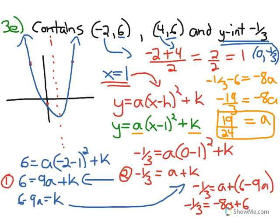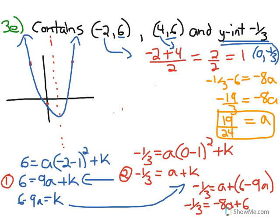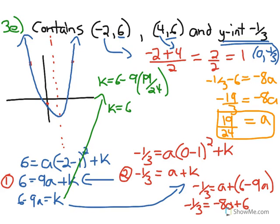I'm going to erase a little bit here. Now we need to sub a back in to solve for k. We said 6 minus 9a equals k right here. So k equals 6 minus 9 into 19/24. k equals 6 minus 57/8. If I've done my math right there, which k equals, again I'm just getting common denominators here, 48 minus 57 is -9/8. Hopefully you can check my algebra there. We've got our a, we've got our k, so we can do our final equation.